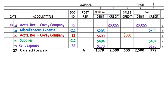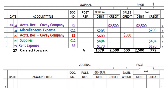After I've verified that these are correct, I now rule what is called a double line. That double line verifies that what I have done is correct and those numbers are accurate. Then on the second page of the journal, make sure to put page 2 in the upper right-hand corner. The date we ended on was the 27th, so we start the second page on February 27th. Instead of 'carried forward,' we write 'brought forward' — this shows the totals came from page 1 so we know where this information originated.